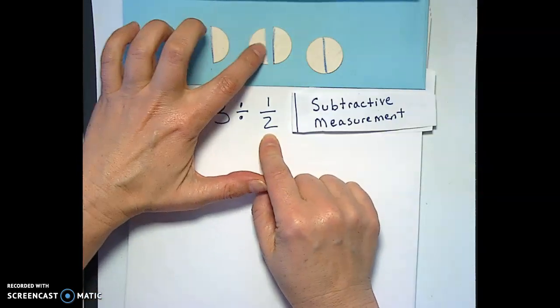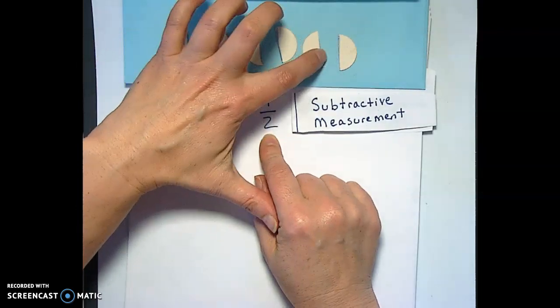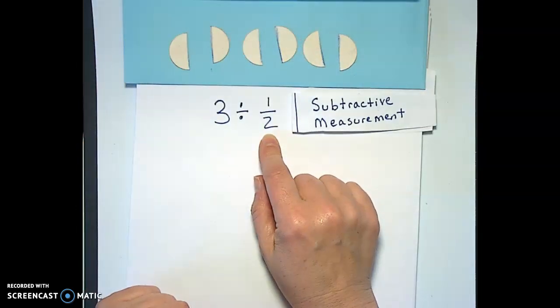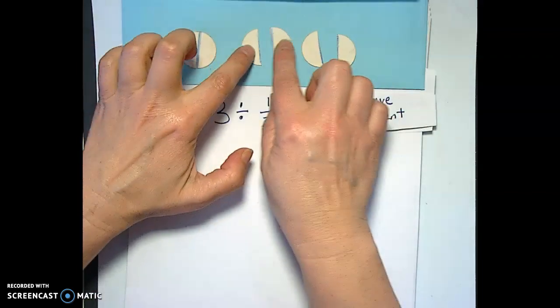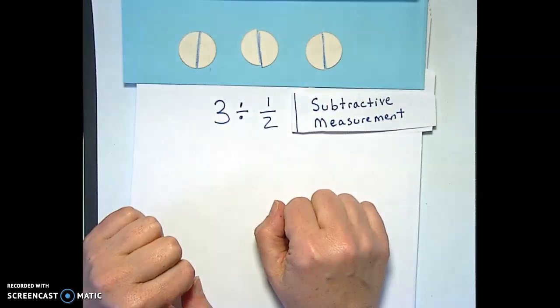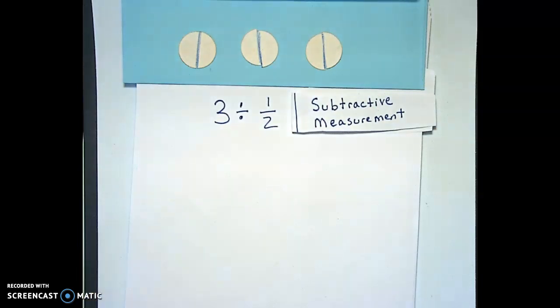So we've got one, two, three, four, five, six pieces of size 1 half in our three or that we can take away from our three wholes. Okay, so let's figure out how we're gonna draw that.